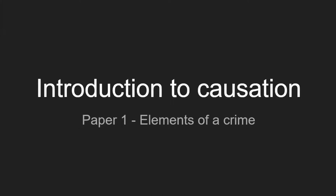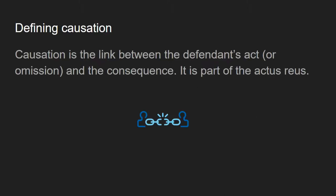Hello and welcome to this video about causation. It's an introduction to causation as it relates to the elements of a crime in paper 1, and so it goes along with work on Actus Reus and Mens Rea, which are the other main elements of a crime. The definition of causation is it's the link between the defendant's act or failure to act and omission, and the consequence or the result of what the defendant has done. So it forms part of the Actus Reus but it's a very important topic on its own.